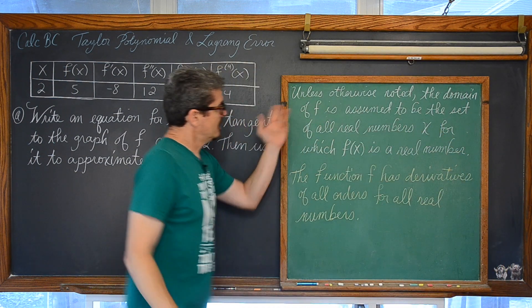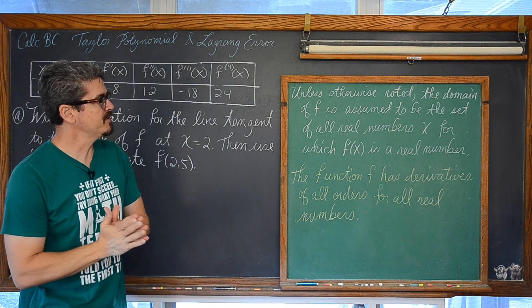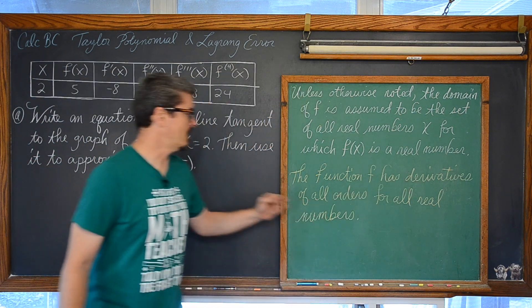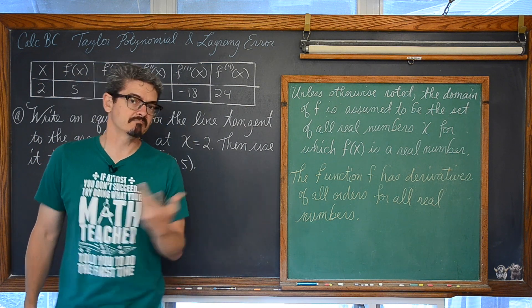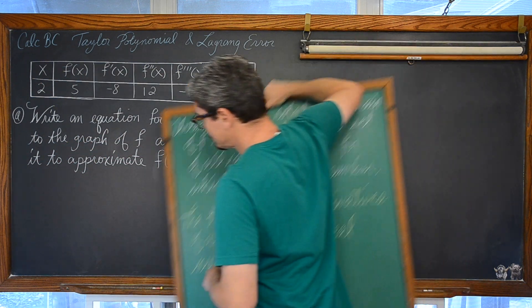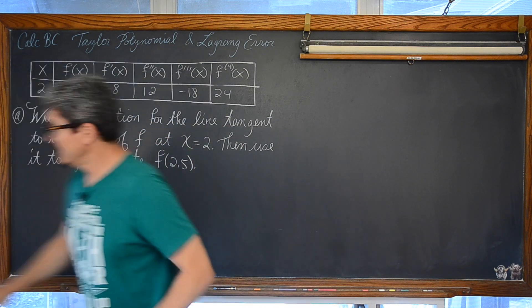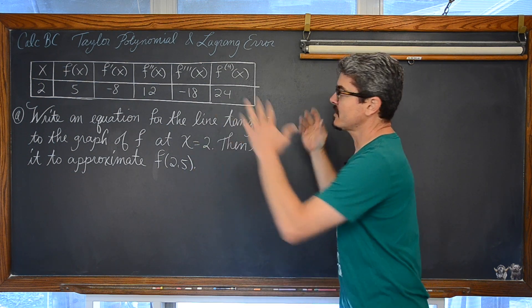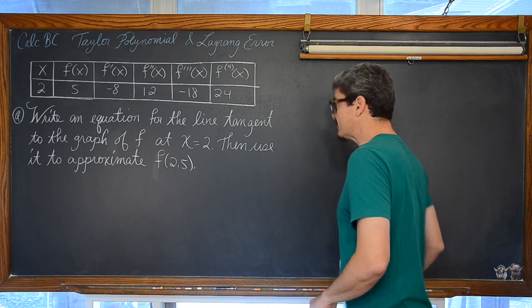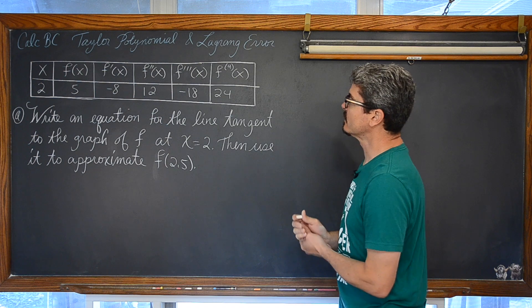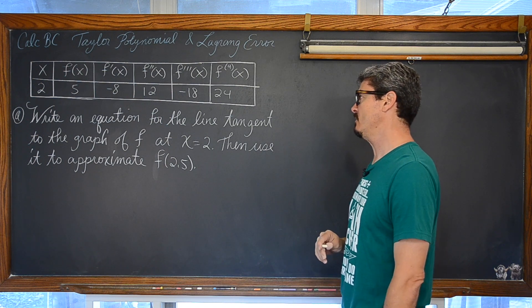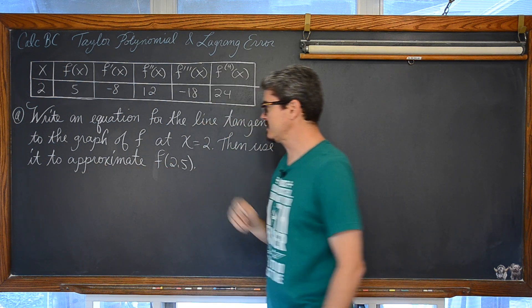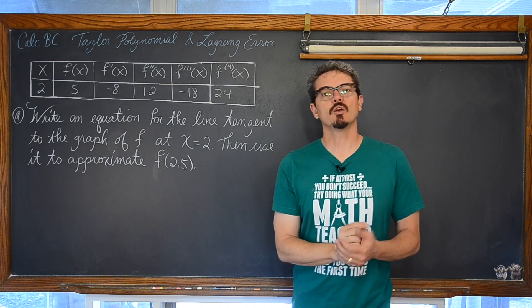So we have here that basically unless otherwise noted the domain of f is assumed to be the set of all real numbers x for which f is a real number. The function f has derivatives of all orders for all real numbers. So with that technicality out of the way we have our table of values describing this function f. We have not created a polynomial that represents this function, but Part A asks us to write an equation for the line tangent to the graph of f at x equals 2 and then use that to approximate f of 2.5. So we have a little bit of linear approximation here.